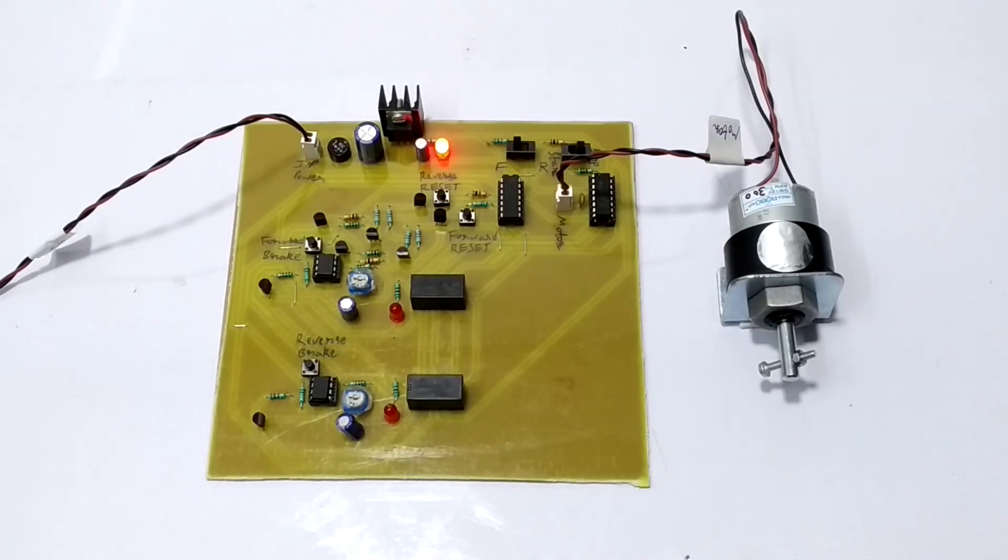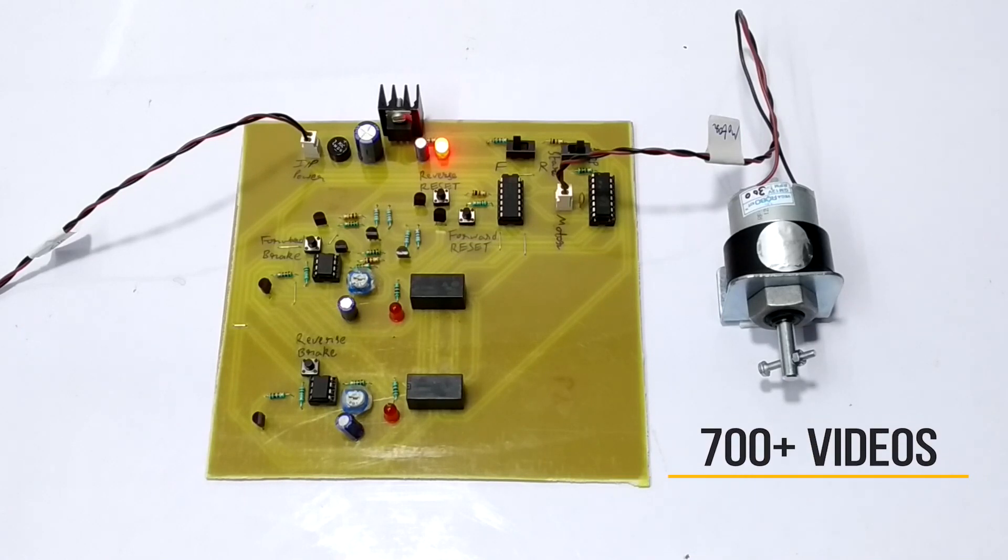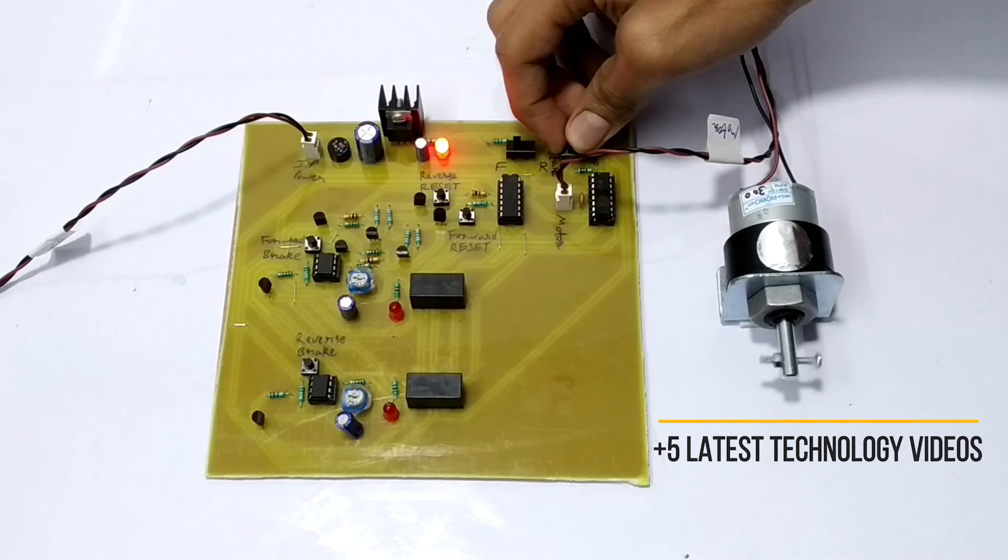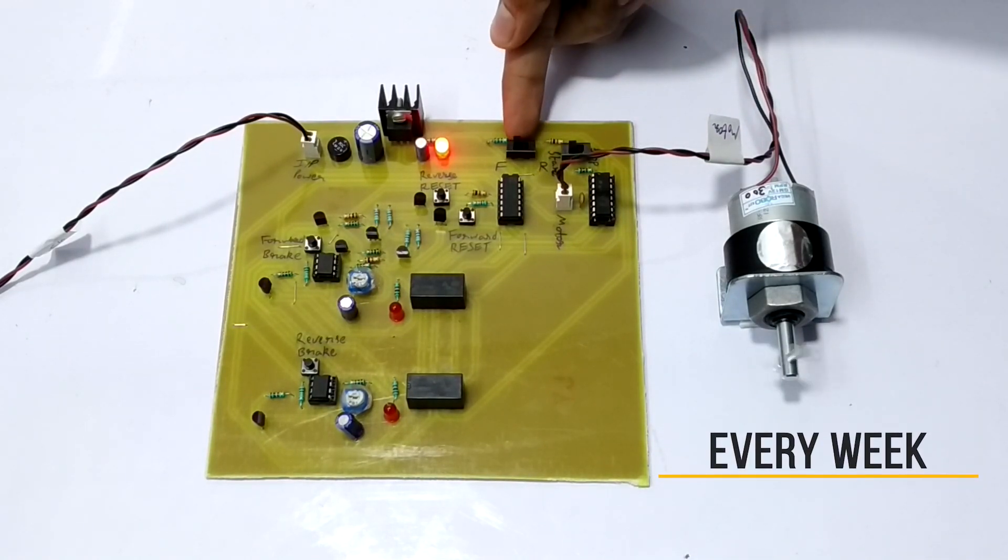We are going to perform 4 operations over here: the forward start, the reverse start, the forward brake and the reverse brake. So first of all, let us set the mode to start. The switch is in forward mode.